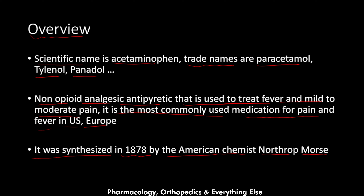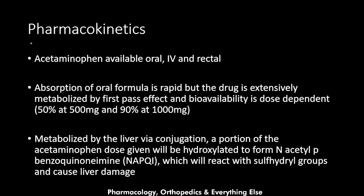Acetaminophen was synthesized in 1878 by American chemist Northrop Morse. Regarding pharmacokinetics, it is available as oral, intravenous, and rectal formulations. Absorption of the oral formula is rapid, but the drug is extensively metabolized by the first-pass effect — once absorbed from the intestine into the blood, it goes into the portal vein and into the liver where it undergoes extensive first-pass metabolism, affecting its bioavailability.